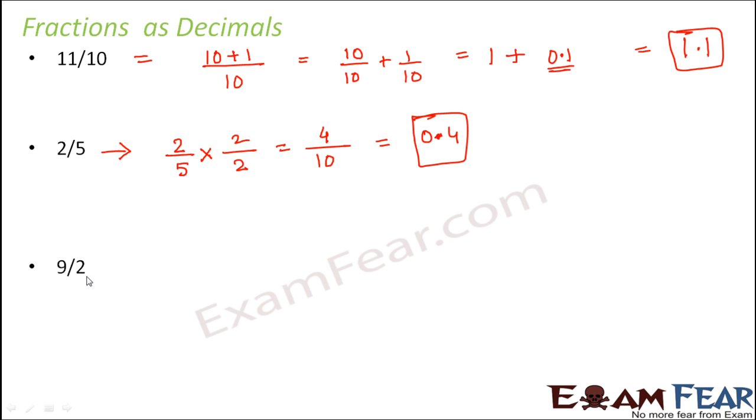Let's look at another example. 9 by 2. In case of 9 by 2 also, we want the denominator to become 10. So what is that number which when multiplied by 2 gives 10? It's 5. So we also multiply the numerator by 5. So it is 45 by 10. So 45 by 10 means 4.5. We have converted 9 by 2 into the decimal form that is 4.5. So in this fashion, we can convert fractions into decimals.